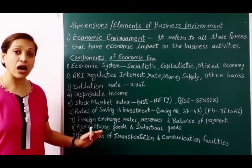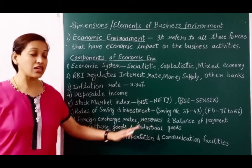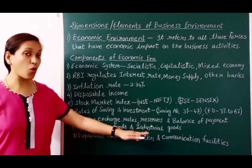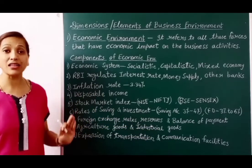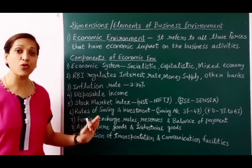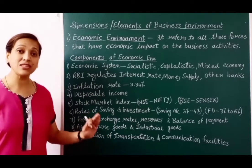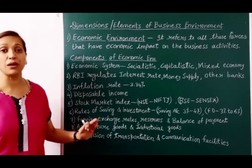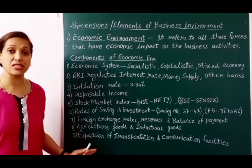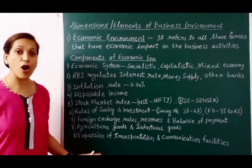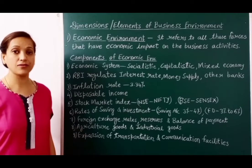The last component is expansion of transportation and communication facilities. If proper transport and communication facilities — like railway, roadway, phone, internet, post and telegram — are available in every corner of India, the whole country will be connected. Then we can purchase or sell goods and services from anywhere, and business projects can also be set up in backward areas. If you understand these components well, you will easily identify economic environment in HOTS questions.